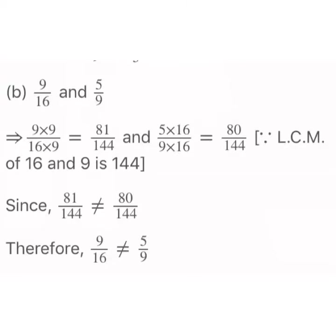The next pair is 9 upon 16 and 5 upon 9. Because the denominators are different, we find the LCM of 16 and 9 to make the denominators common. The LCM of 16 and 9 is 144.